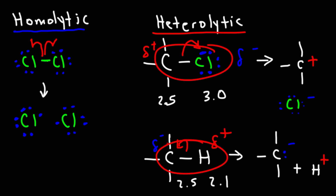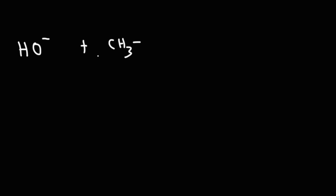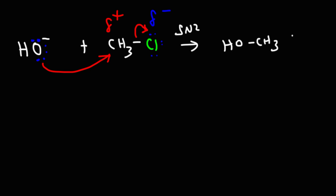Let's look at these two reactions in real life. Say we have hydroxide reacting with methyl chloride. Hydroxide has a negative charge; chlorine has a partial negative charge; carbon has a partial positive charge. So hydroxide is attracted to the partially positively charged carbon atom. As a nucleophile, it attacks that carbon, and as a result this bond breaks. The electrons go toward the more electronegative chlorine atom. This is an example of an SN2 reaction — we get methanol as a product and the chloride ion. As this bond breaks, that's a heterolytic bond cleavage.